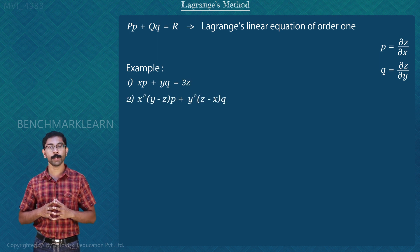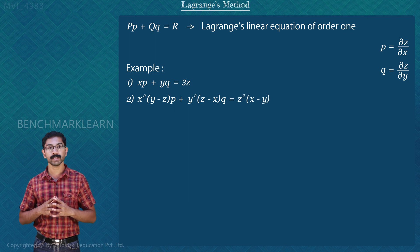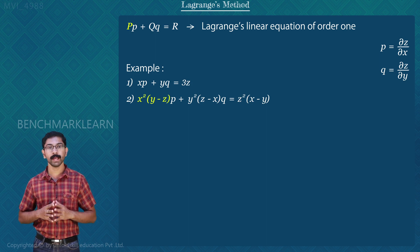2) x²(y-z)p + y²(z-x)q = z²(x-y). Here, P is x²(y-z), Q is y²(z-x), and R is z²(x-y).